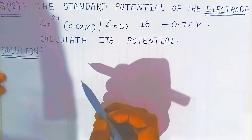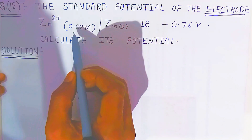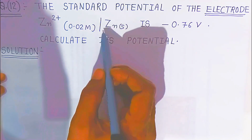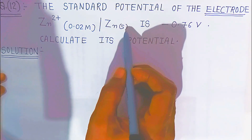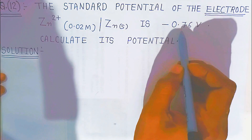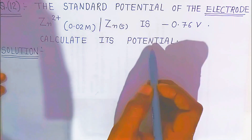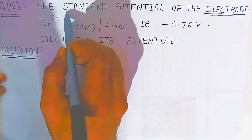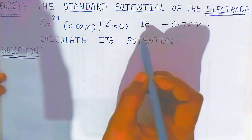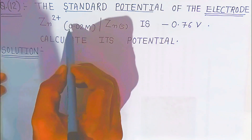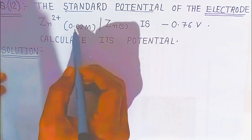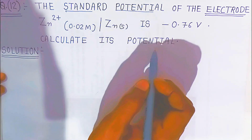We are talking about the potential of the electrode when zinc 2+ concentration is 0.02 molar in contact with zinc solid, which is minus 0.76 volt. We need to calculate the potential — that means we have to find the electrode potential when the concentration is 0.02 molar.